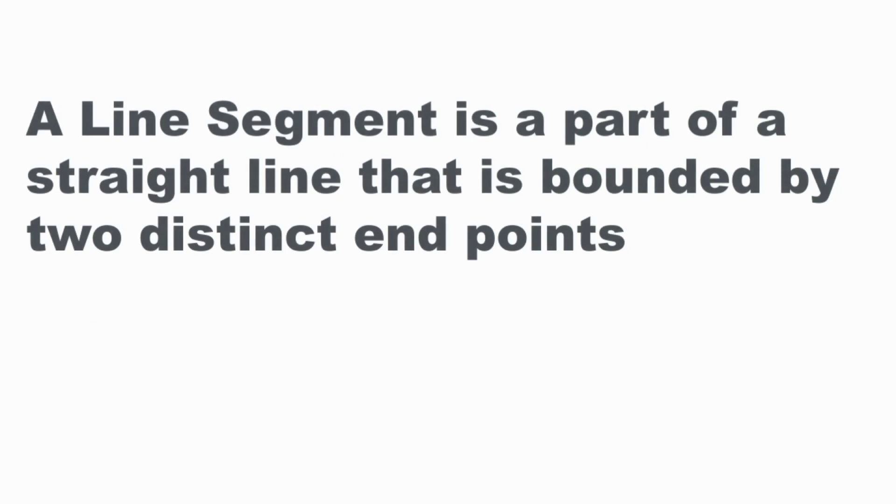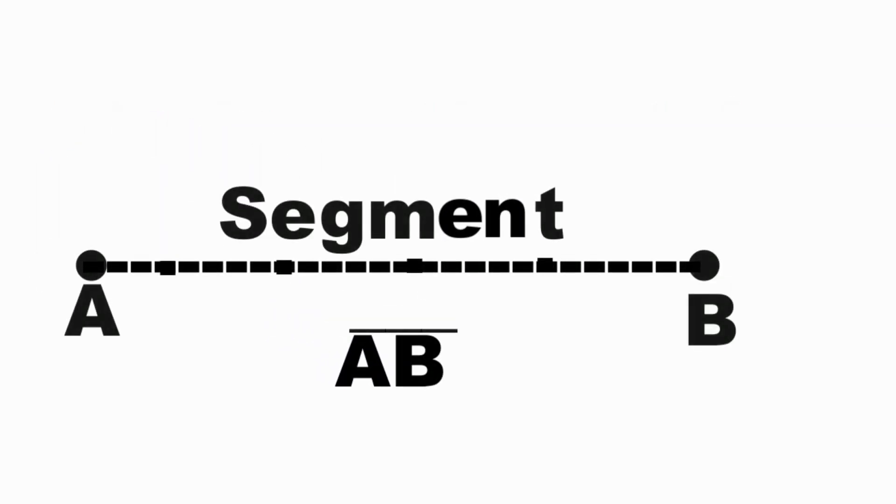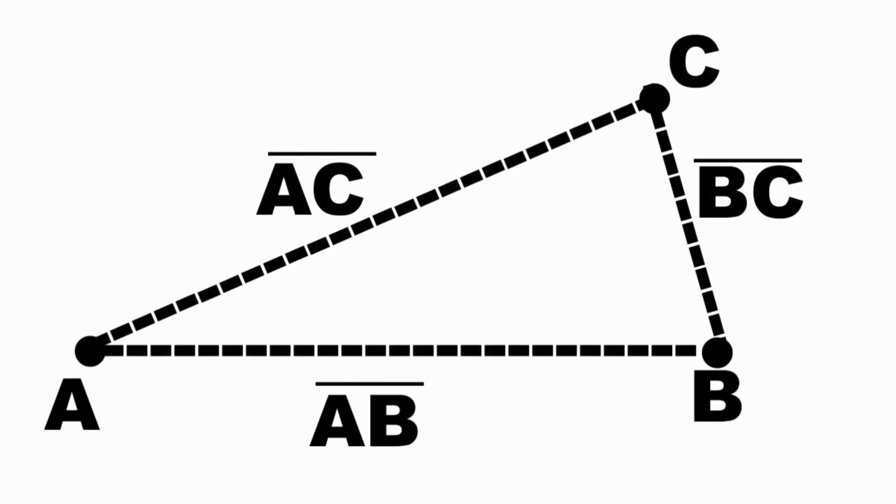A line segment is a part of a straight line that is bounded by two distinct end points. This is a line, and this is a segment with two end points. Three segments intersecting at the end points form a triangle.